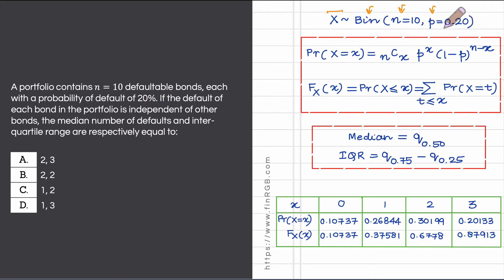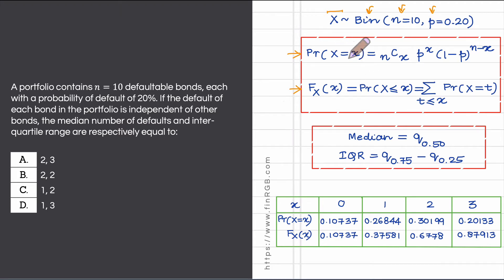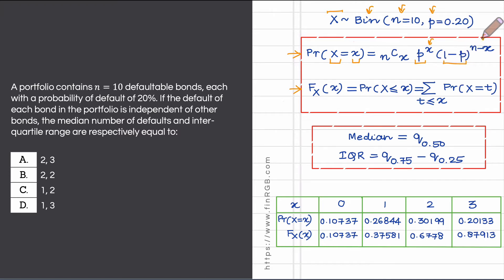In this setup we think of a default as a success, and each bond is like a trial. Quickly recall the PMF — the probability mass function — for a binomially distributed X. The probability that X takes on a specified value x equals NCx times the probability of success raised to the number of successes, times the probability of failure raised to the number of failures.